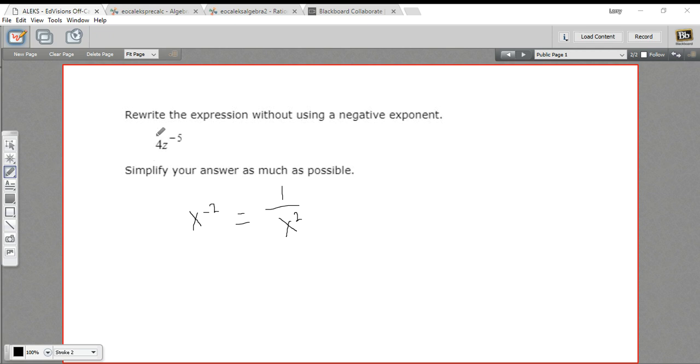In this expression, we have a 4, and then it's multiplied by z to the negative 5th. That negative 5th power only applies to the z. So this is really 4 times 1 over z to the 5th.